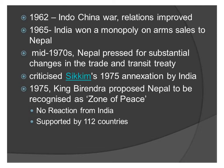In 1965, India won a monopoly on arms sales to Nepal. However, in the mid-1970s, Nepal started pressing for substantial changes in the trade and transit treaty, and Nepal also criticised the annexation of Sikkim by India. In 1975, King Birendra proposed that Nepal be recognised as a zone of peace. This proposal was immediately supported by China and Pakistan and is now supported by 112 countries. However, India gave no reaction, saying that the whole of South Asia should be recognised as a zone of peace. India saw this proposal as Nepal drifting away from its special relationship under the 1950 treaty and treating China as equal to India in its relations.